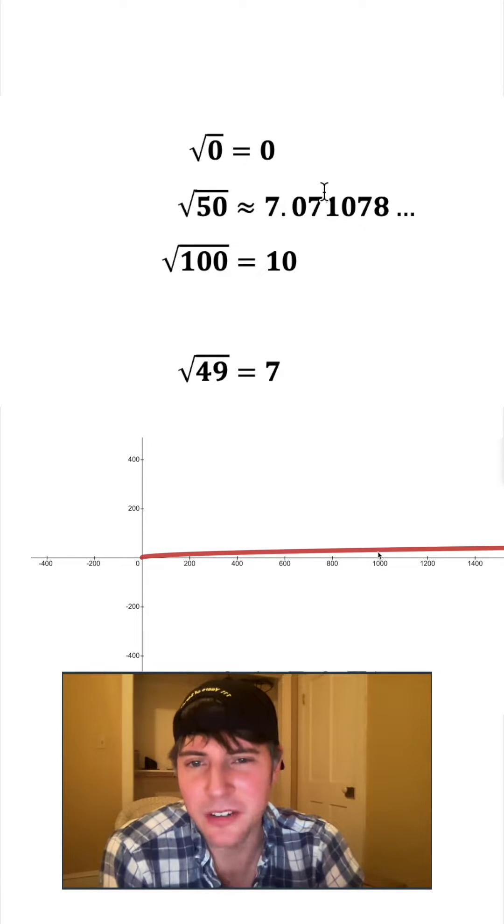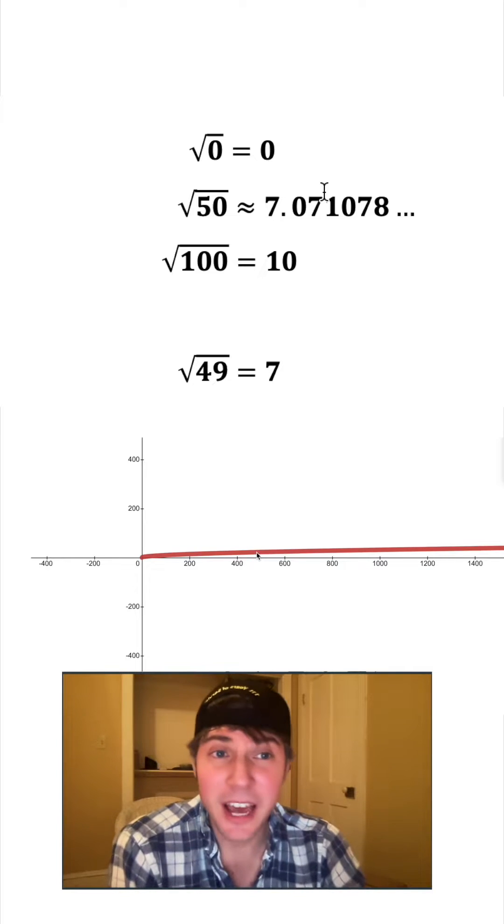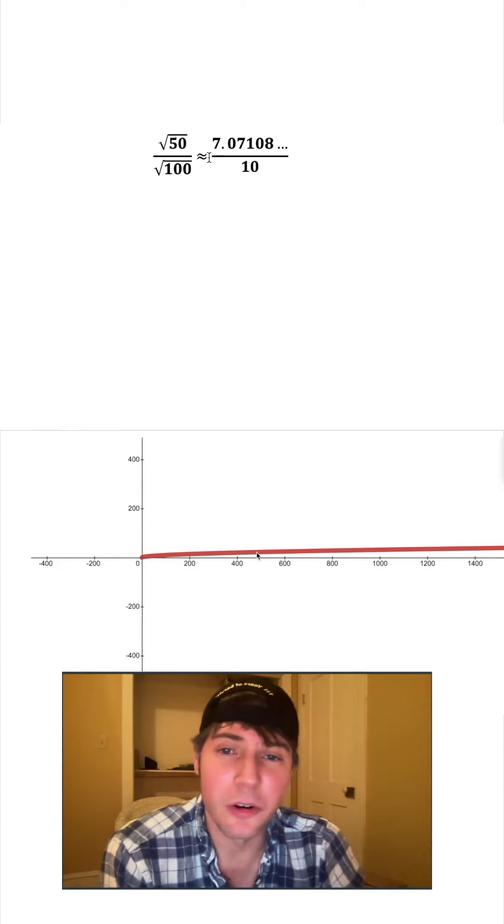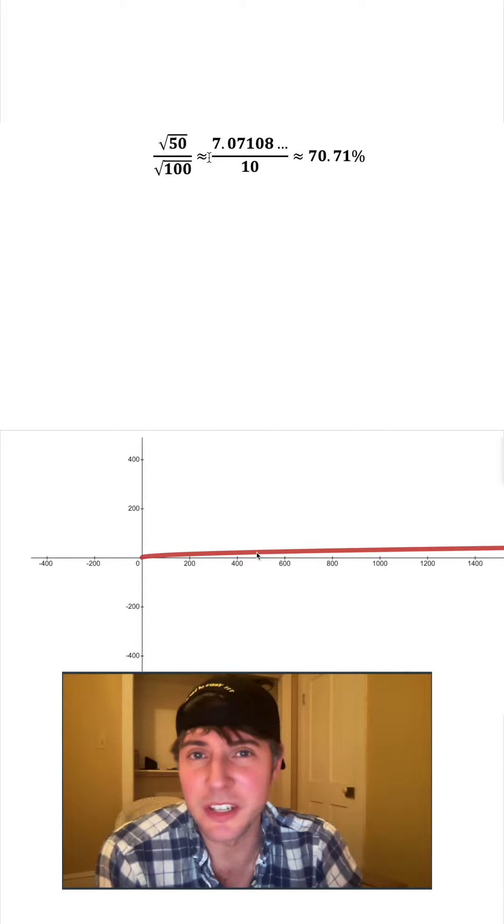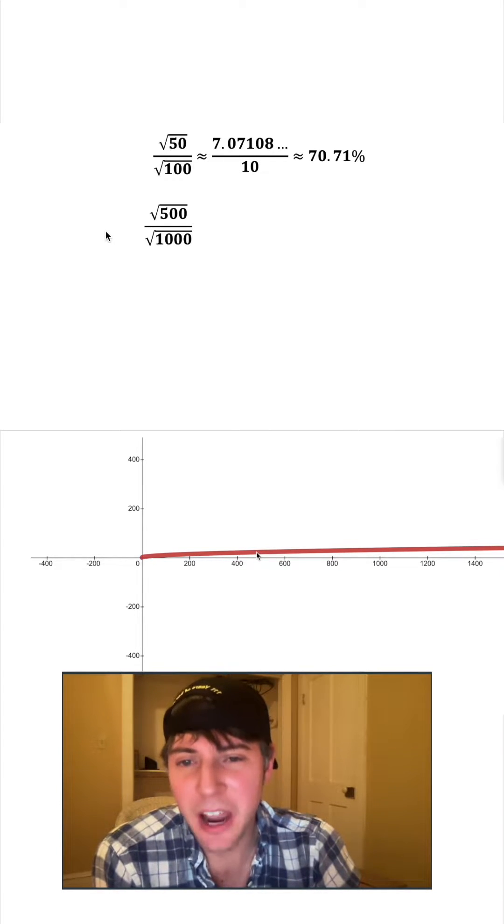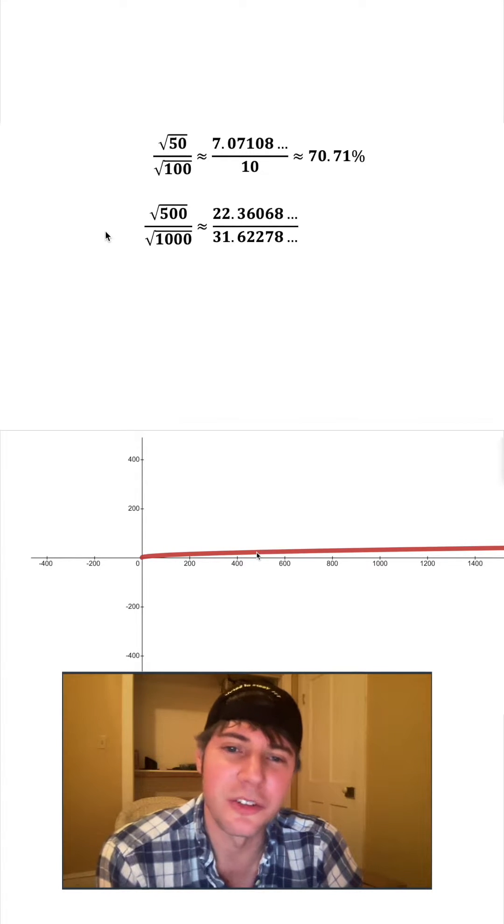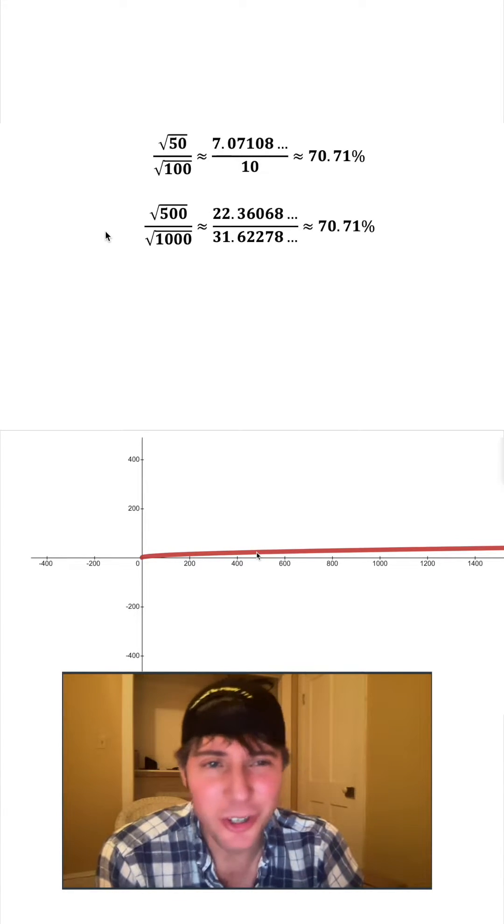What if we try the square root of a thousand versus the square root of 500? What does that end up giving us? If you remember, root 50 over root 100 was about this over 10, which is about 70.71 percent. When we look at root 1000, that's about 22.36068 over 31.62278. Guess what? That's also 70 percent.